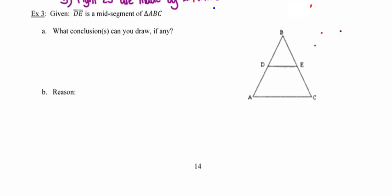Alright, the last one says segment DE is a mid-segment of triangle ABC. So again, it's really critical here that you know what it means for a segment to be a mid-segment. If DE is a mid-segment, that tells me that points D and E are midpoints, because that's what a mid-segment does. It joins midpoints of any two sides. So I know that D is the midpoint of side AB.